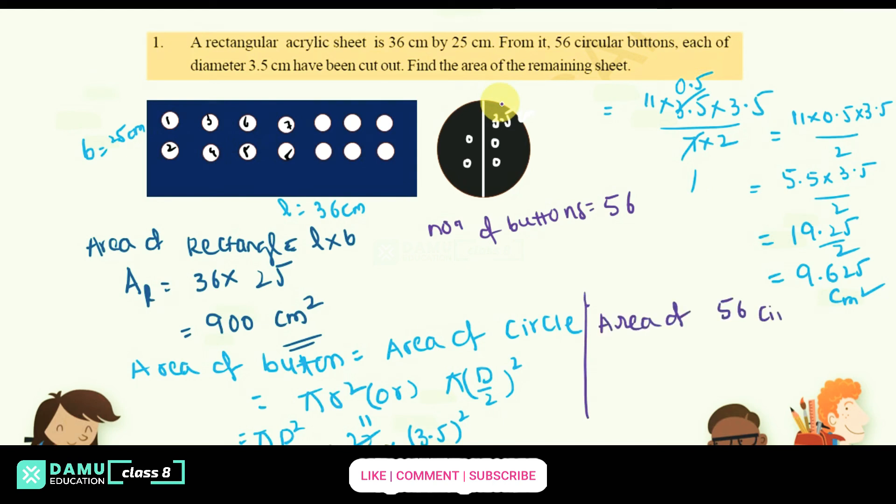Then area of 56 circular buttons, circular buttons, that will be equal to 56 into area of each button.